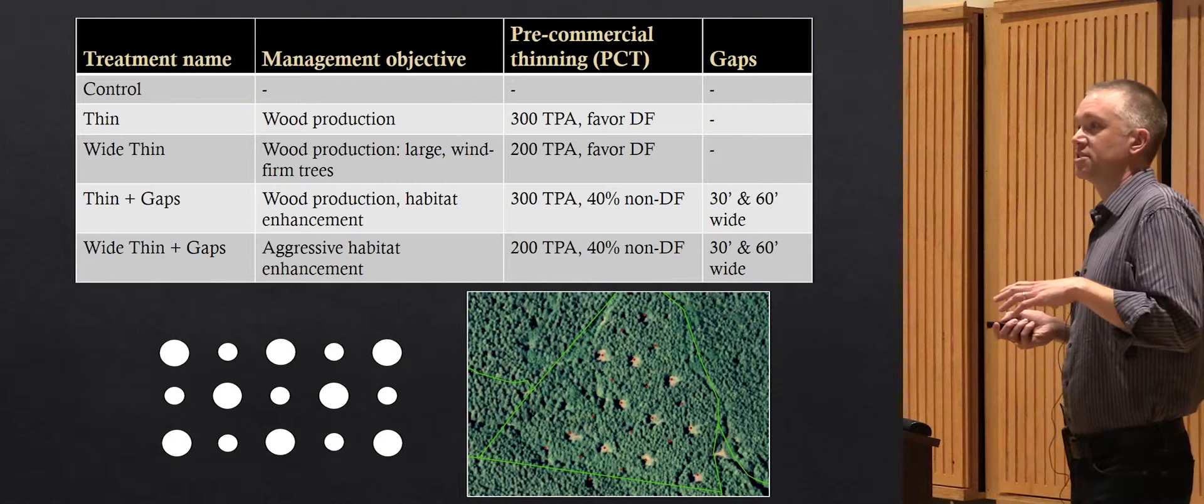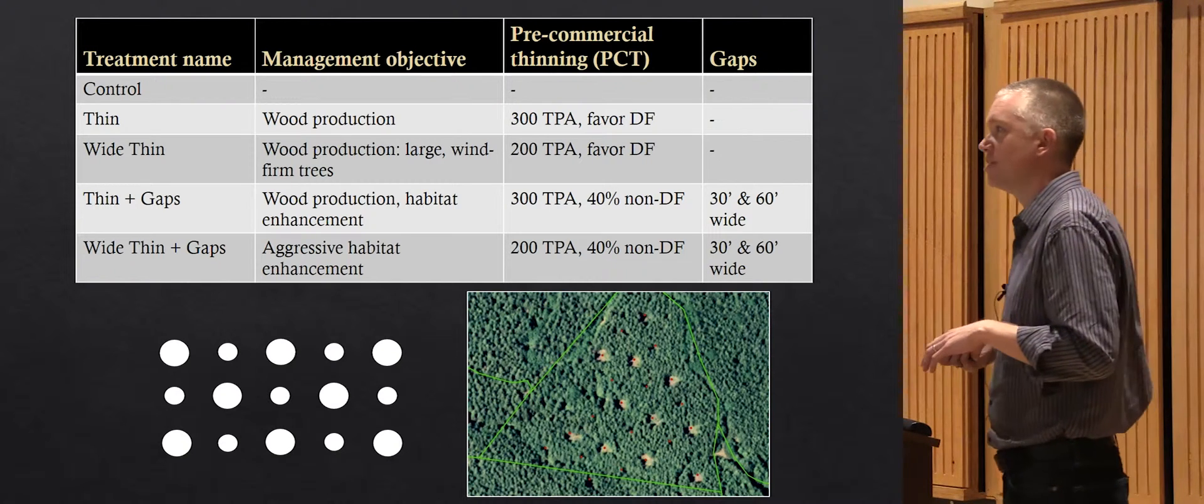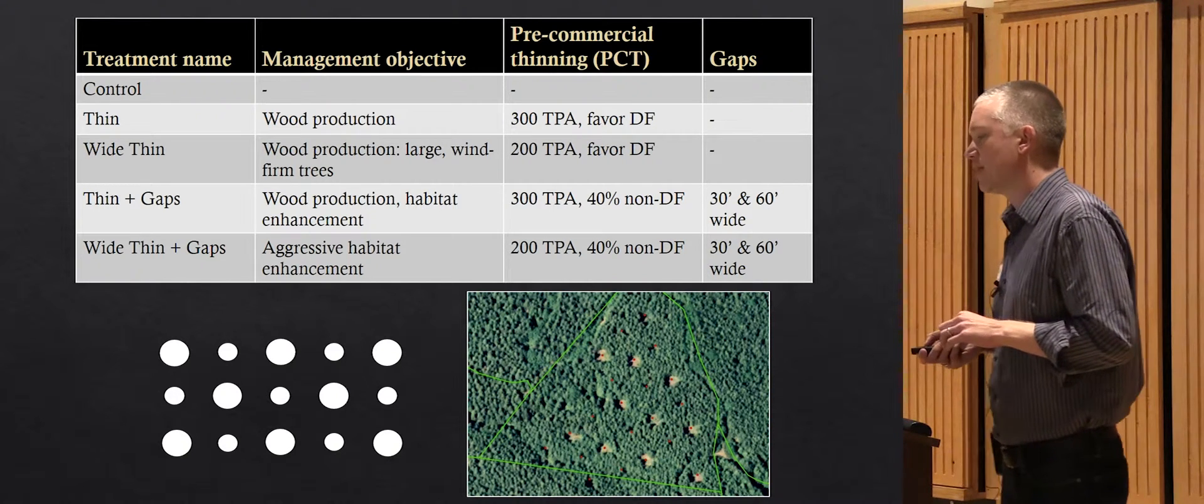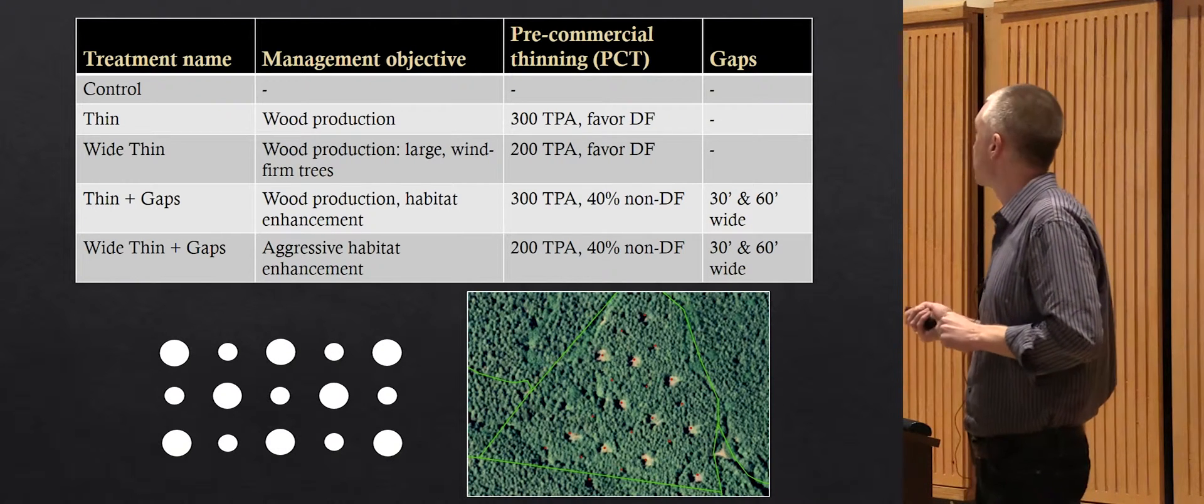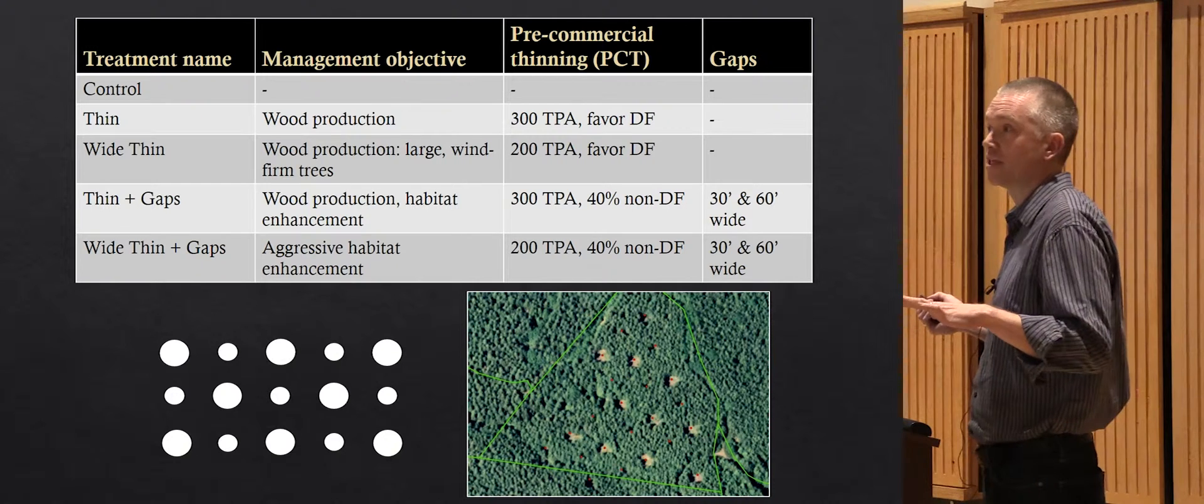This study had five different treatments. The same treatments were replicated at each of the five sites, and all treatments were based on specific management objectives. We have this control treatment where no thinning was done.